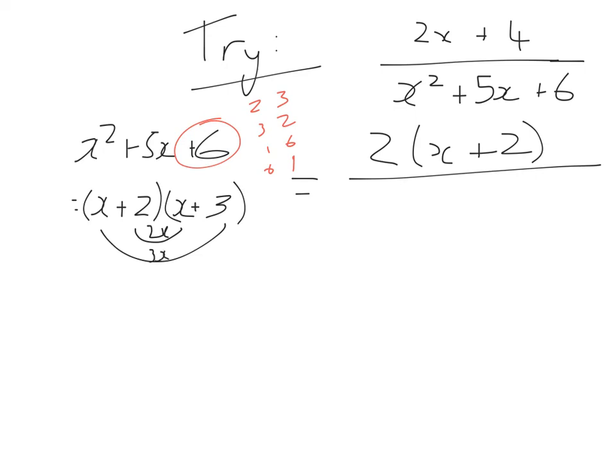Do our smiley faces, 2x, 3x. They both add together to give us 5x. We've done it correctly. So now I'm going to take that answer and put it over to the bottom of my fraction. So it's going to give me x plus 2 bracket x plus 3.